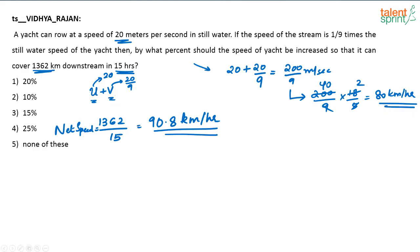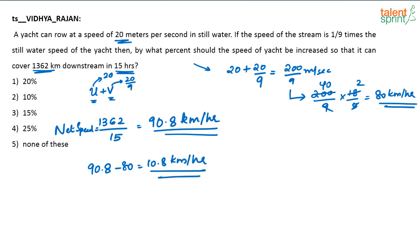So the net speed — the speed of the boat in still water plus the speed of the water current — is currently 80 km/h. But to cover 1362 kilometers in 15 hours, the net speed must be 90.8 km/h. So the increase in speed needed is 90.8 minus 80, which is 10.8 kilometers per hour.